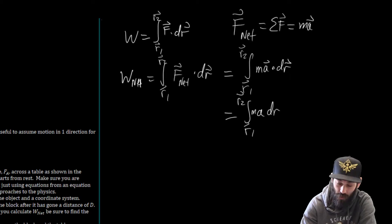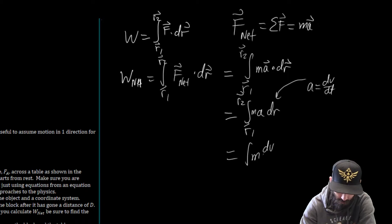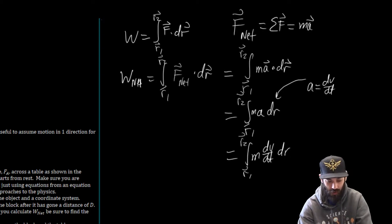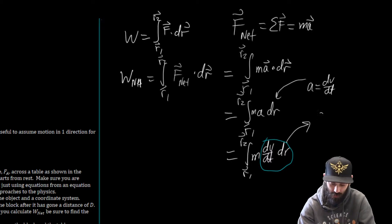So this is going to be equal to the integral from R vector 1 to R vector 2 of M times A dr. Now, we know from our definitions from kinematics that A is going to be dv/dt. So let's take that and plug that in here. So this is going to be the integral M times dv/dt times dr from R1 to R2.